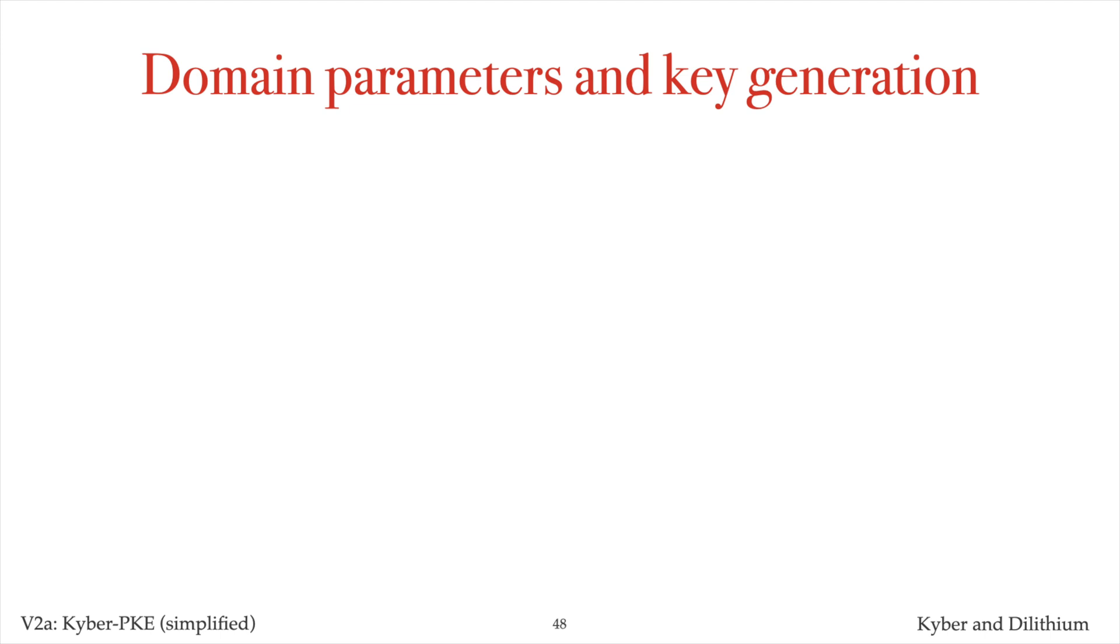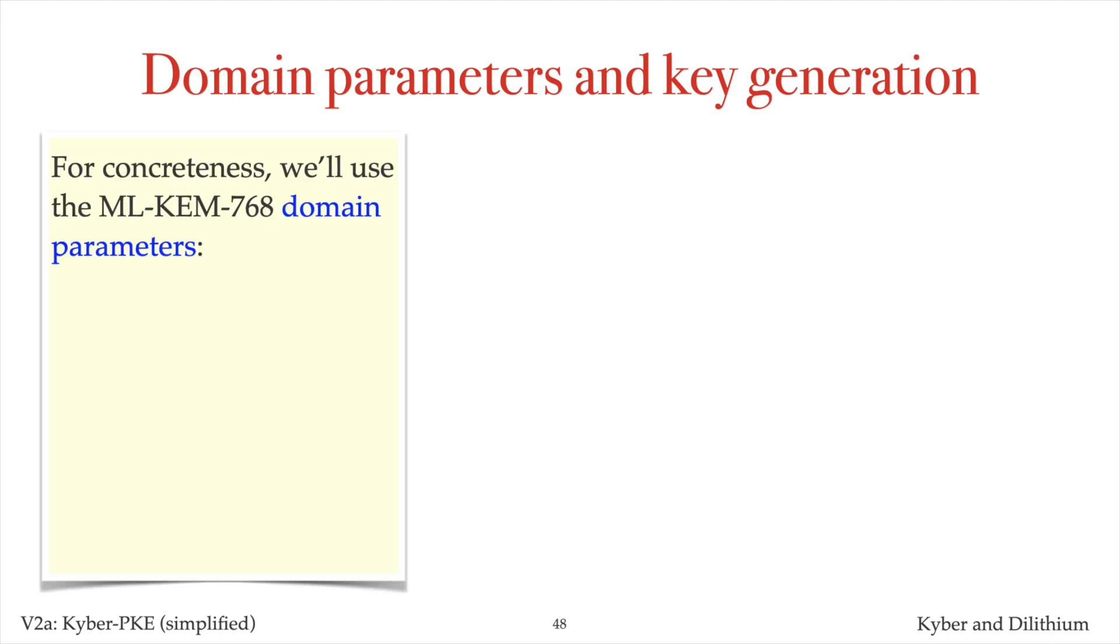We're now ready to present the simplified version of the Kyber public key encryption scheme. The Kyber PKE is comprised of three algorithms: key generation, encryption, and decryption. For concreteness, you should consider the MLChem 768 parameters that are specified in FIPS 203. The NIST standard specifies two other parameter sets. The modulus is the prime q equals 3329 and N is 256. In fact, these values of q and N are used in all three parameter sets in FIPS 203. We also have the parameters k equals 3, eta 1 equals 2, and eta 2 equals 2.